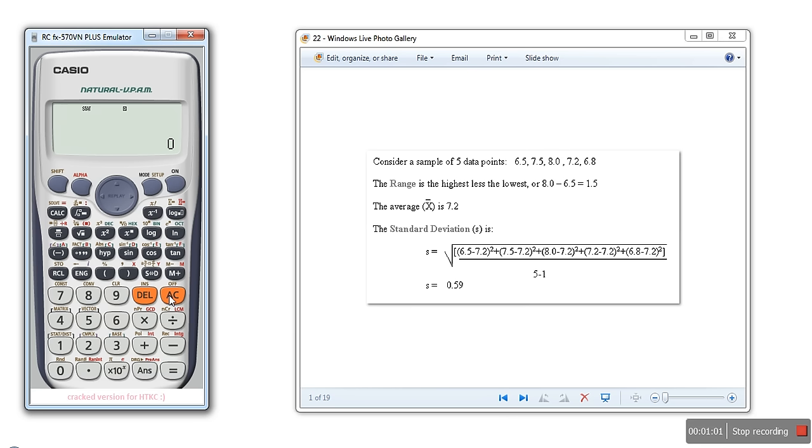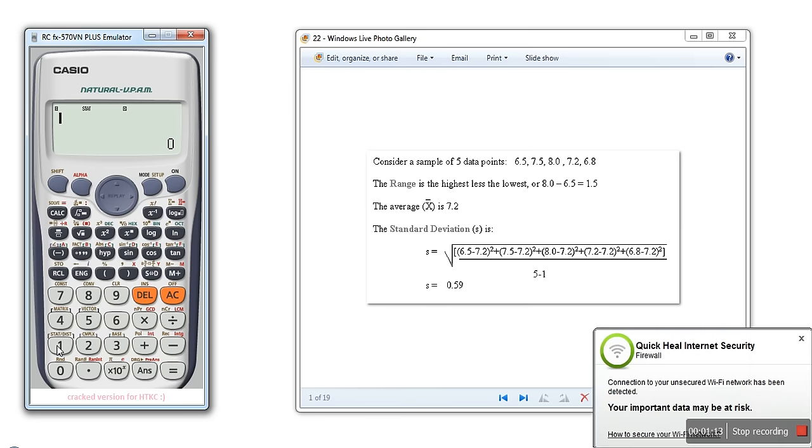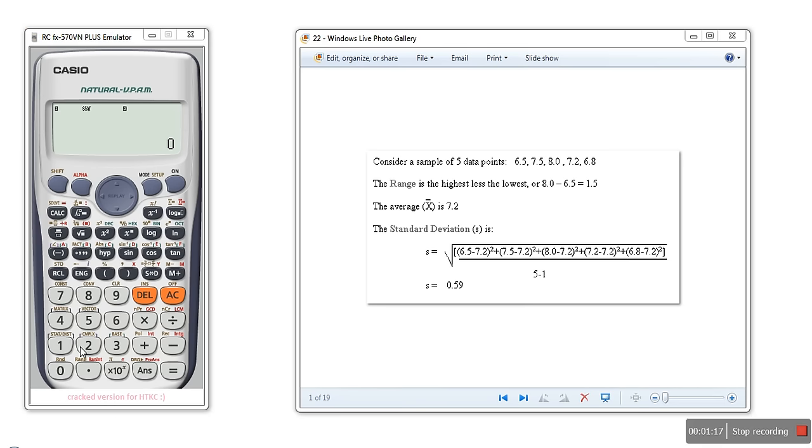Next, to calculate what we want, we will press the Shift key and then go to the Stat menu. You can see Stat is written on key one, so we will press one. It's asking what we want to select. We are going for Var, which is option 4.